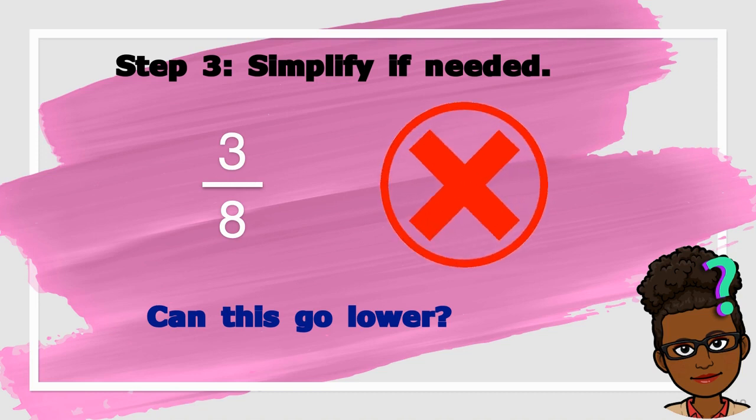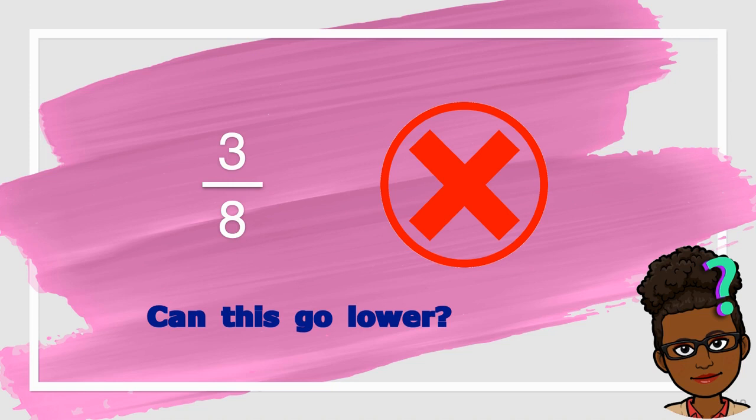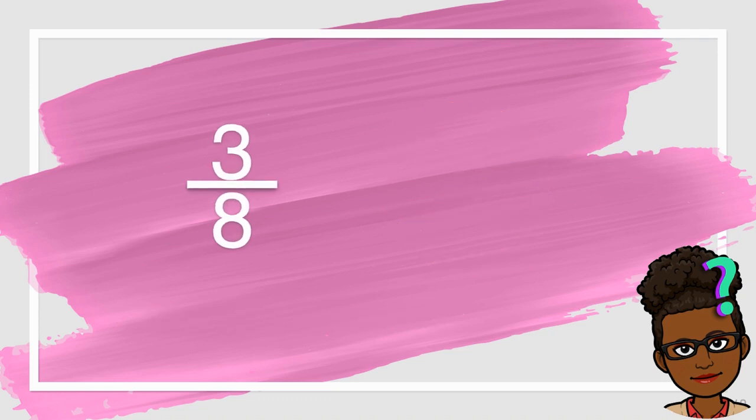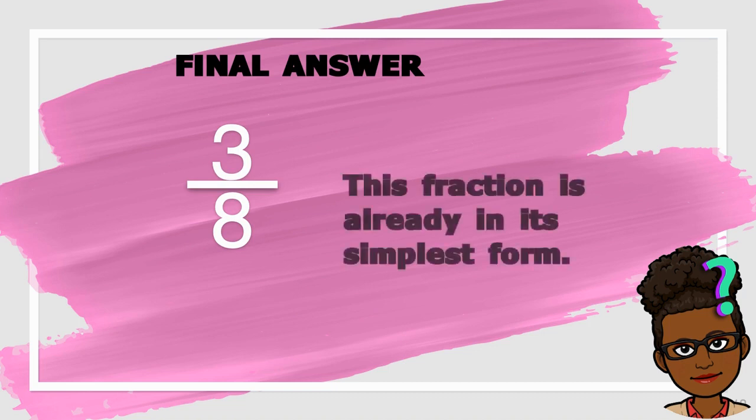Remember, in order for a fraction to be simplified, there must be a number that will divide evenly into both the numerator and denominator. You're doing an awesome job. So because this fraction cannot go any lower, our final answer is three-eighths. This fraction is already in its simplest form.